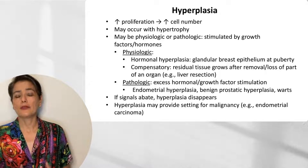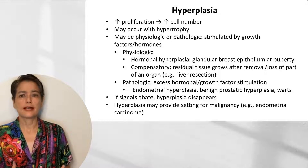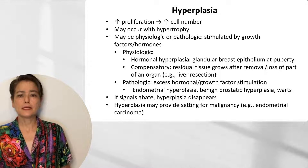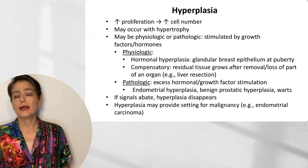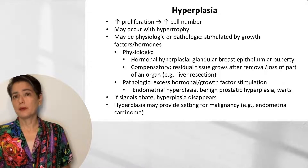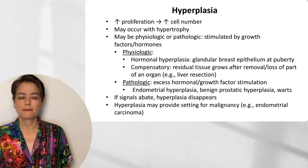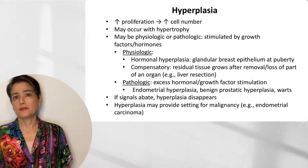Like hypertrophy, hyperplasia may be physiologic or pathologic. The stimulus for hyperplasia will be growth factors or hormones. Physiologic examples include hyperplasia due to hormones, such as glandular breast epithelium at puberty, or compensatory growth after removal or loss of part of an organ — for example, liver resection — which we can take advantage of clinically in living donor liver transplants. Pathologic examples of hyperplasia are due to excess hormone or growth factor stimulation. Classic examples include endometrial hyperplasia, associated with obesity due to peripheral conversion of testosterone to estrogen. We also see it in benign prostatic hyperplasia and in warts infected by human papillomavirus due to hyperplasia of the epithelium.